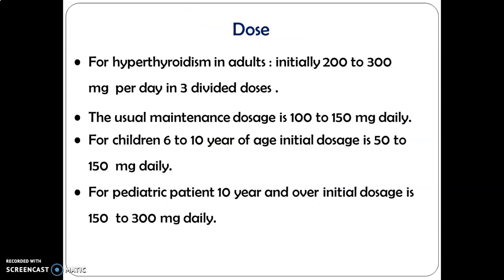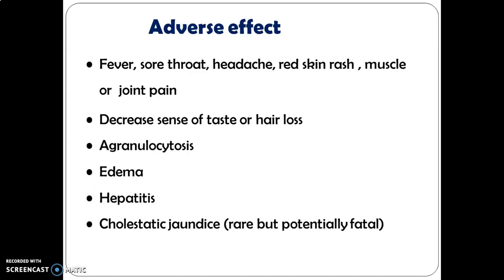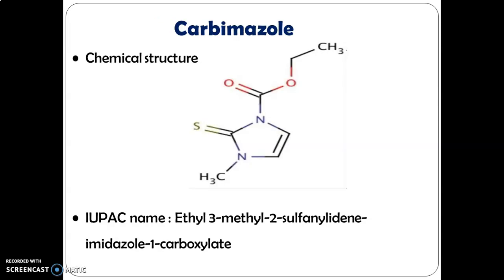Dose of propylthiouracil: 200 to 300 mg per day in three divided doses; maintenance dose is 100 to 150 mg. Adverse effects include decreased sense of taste and smell, sore throat, headache, red skin rash, muscle or joint pain, edema, hepatitis, and cholestatic jaundice.